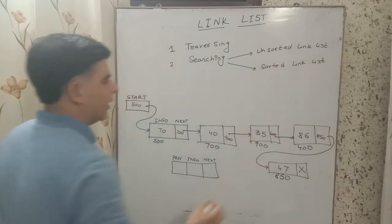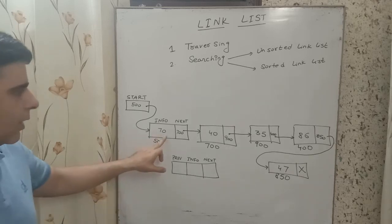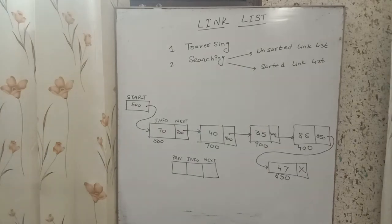In a linked list we can only apply linear search because we cannot directly find the middle element. If the linked list is unsorted, we search through all nodes. If the linked list is sorted, we can take advantage of that ordering. The next operation is insertion.